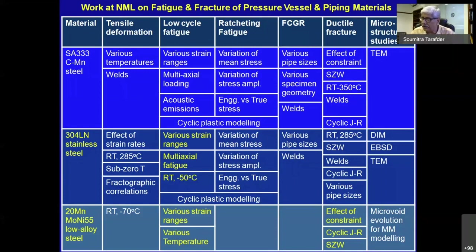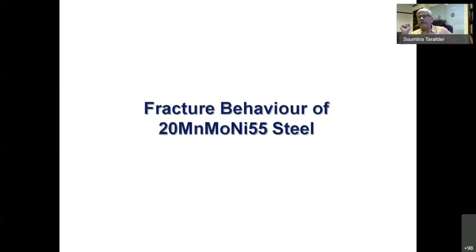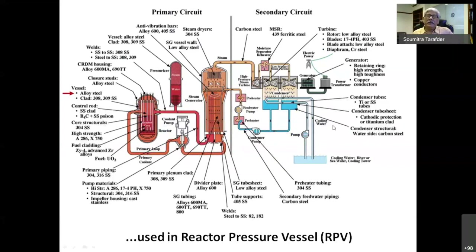Let me start by looking at the fracture behavior of 20MnMoNi55 steel. These steels are used in a nuclear power plant for making the pressure vessel — the vessel that encloses the heart of the nuclear power plant. Therefore, they have to be very tough; they should not fail at any point, and their fatigue and fracture behavior is extremely important. We're talking about a steel with essentially a bainitic structure, and the input material we looked at is an 85 mm thick forged plate.